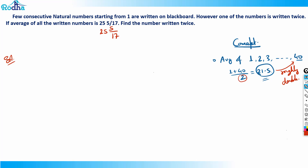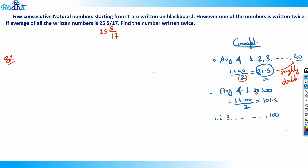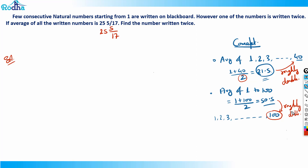Take another example: average of 1 to 100. First term is 1, last term is 100, so average is 101/2 = 50.5. There are 100 natural numbers and the average is 50.5 — roughly half of 100. So the average is roughly half of the total count of numbers. That's the concept.